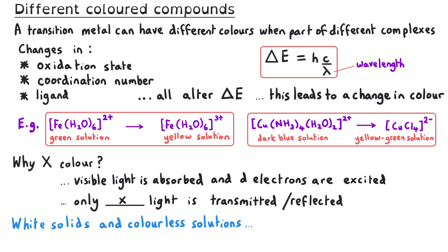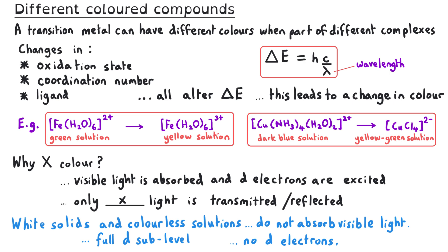You could also be asked why a particular metal compound appears to be a white solid or a colourless solution. You would need to say that this is because they have a full D sub-level, or they have no D electrons at all, and so they cannot absorb visible light. That is why they appear to be white or colourless, because all of the light is transmitted or reflected.